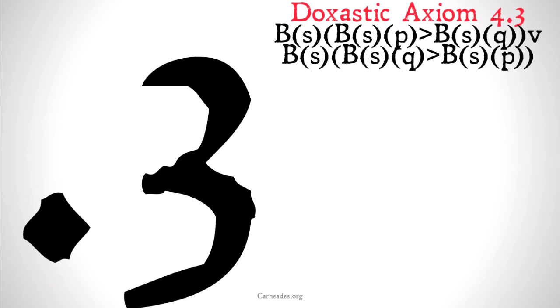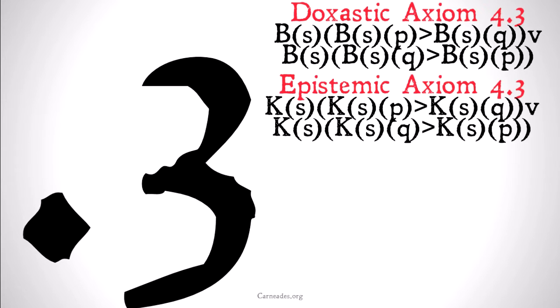Axiom 4.3 is going to be stronger than Axiom 4.2, but weaker than Axiom 4.4. It's going to be in between Axioms 4 and Axiom 5 as well. So let's take a look.